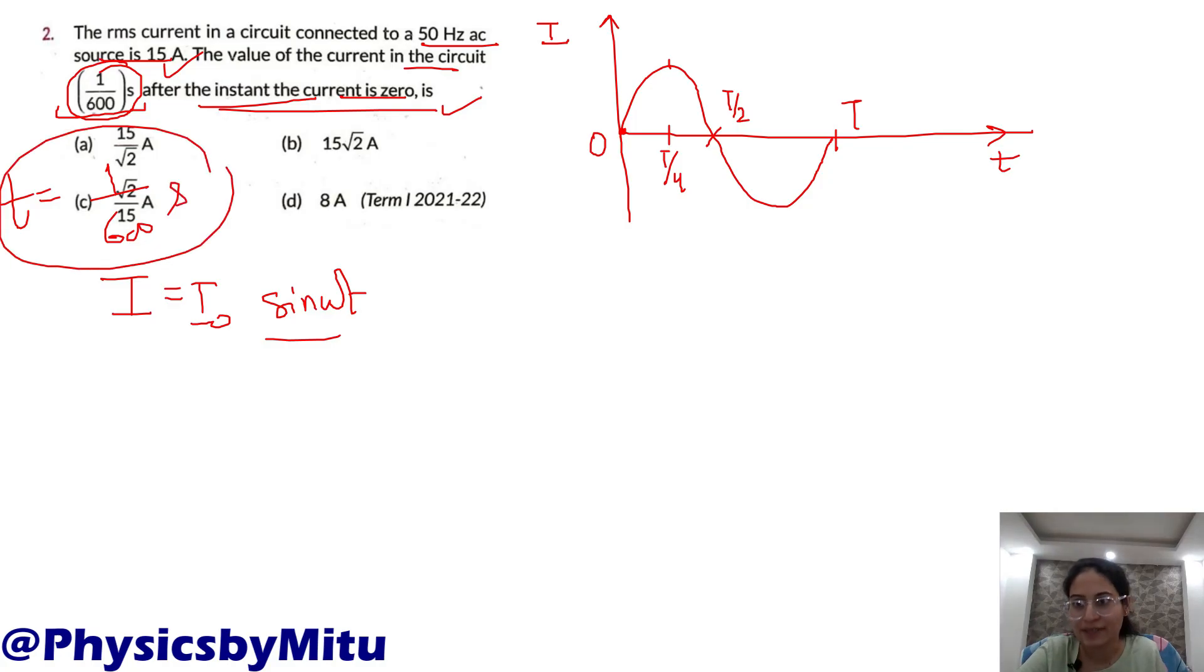Current is zero at time zero. What will be the current value after 1/600 seconds? We have to find the instantaneous value of current at 1/600 seconds.